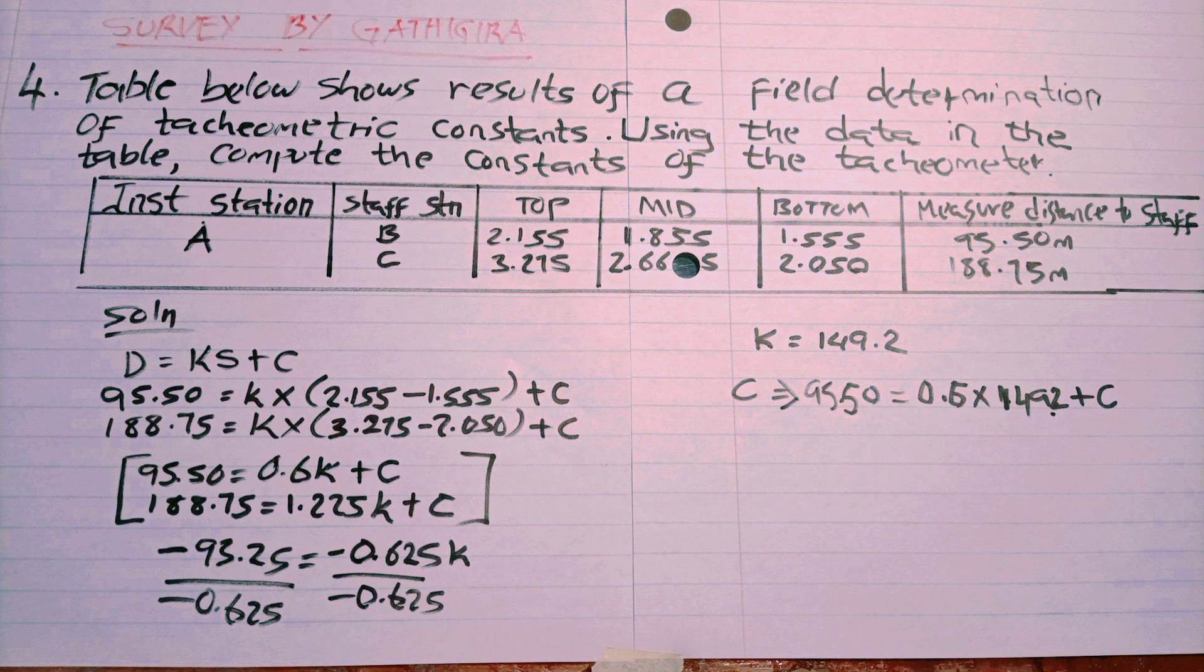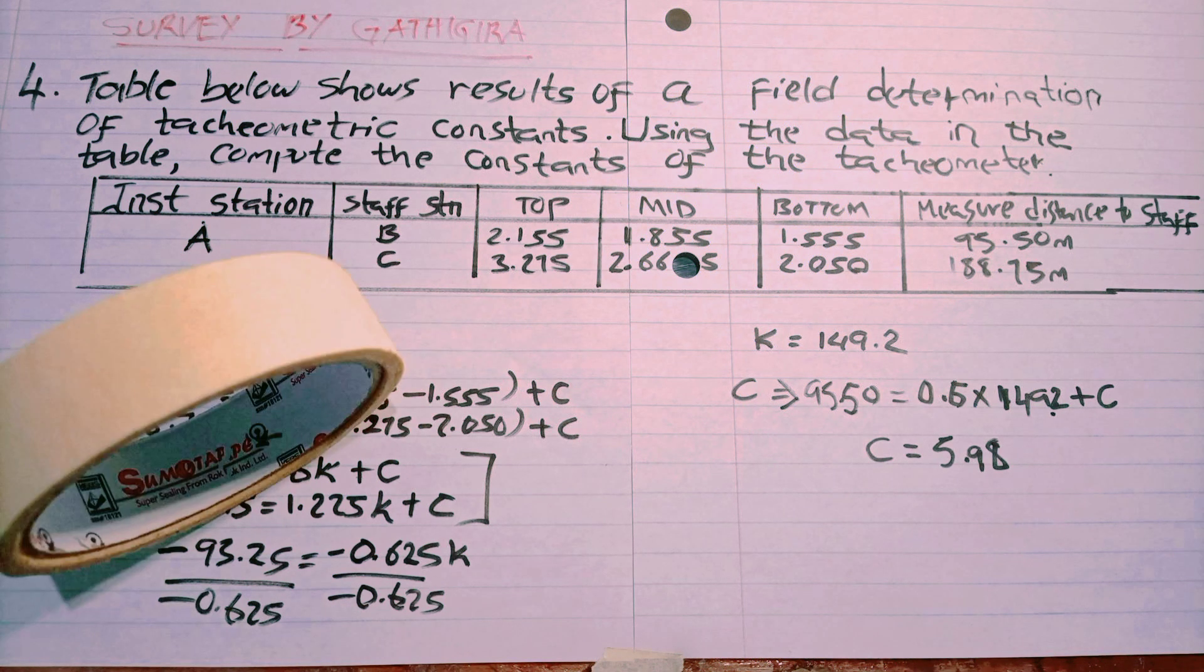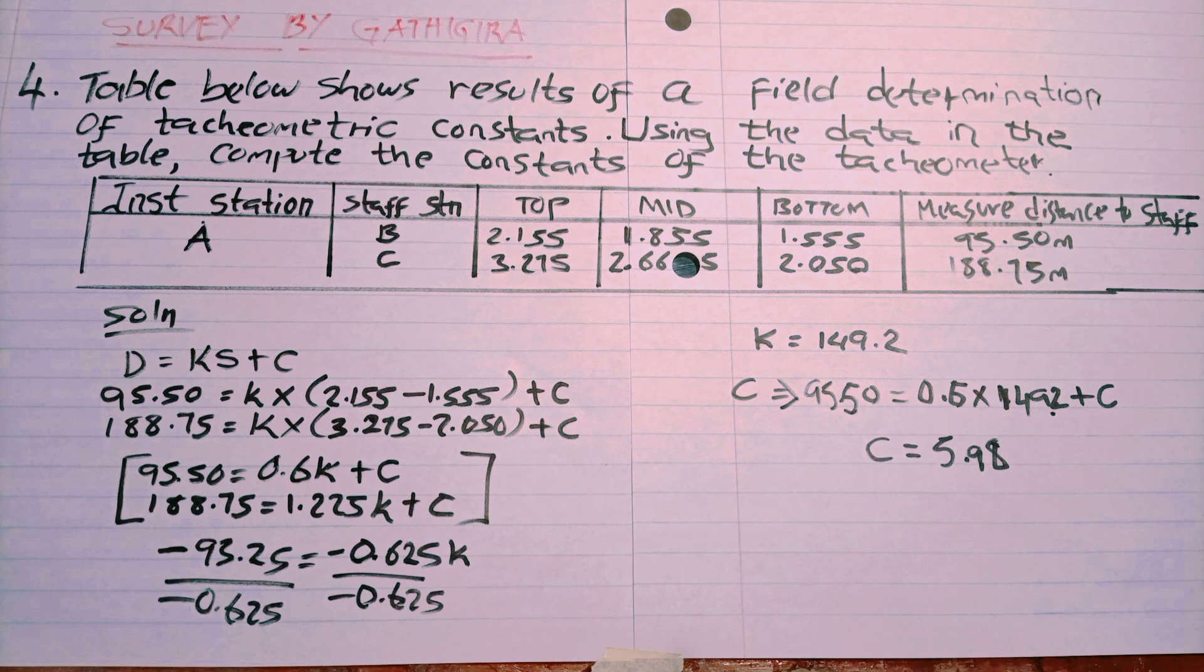After multiplying, by use of comparison, we have C as 5.98.